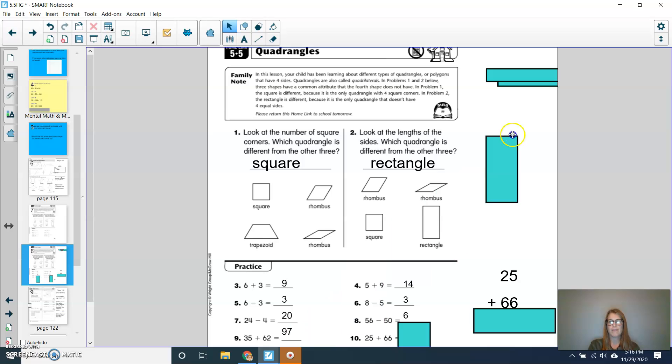For the last one, number 10, 25 plus 66. For this one, I decided to stack them and work the problem out on the side. So I'm going to first add my ones. So I know that five plus six is 11. So I need to borrow, or I'm going to carry. I'm going to put my one up top. And so now I can put, so I have my one up top and my other one below for 11. And then six plus two is eight, plus one more is nine, giving me my total of 91. So double check to make sure that you have your practice correct and fix any mistakes with your pencil and eraser.